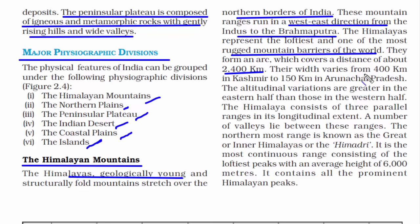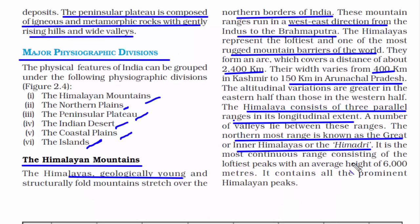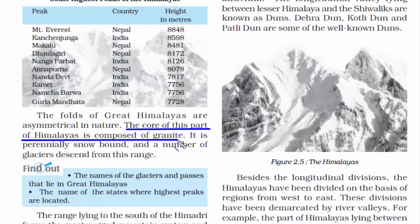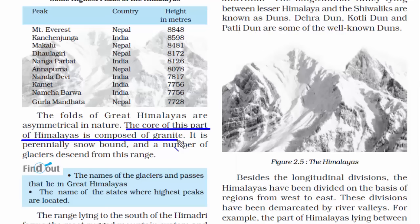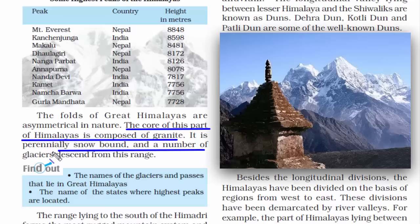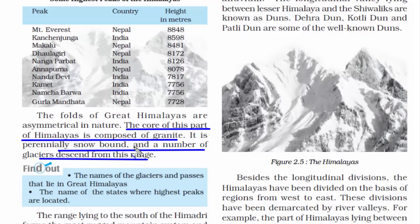The Himalayas consist of three parallel ranges. The northernmost is the Greater or Inner Himalayas, also called the Himadri, where mountain peaks average 6,000 meters in height. The core of the Himalayas is made of granite — igneous rock formed from solidified magma — suggesting a huge volcanic eruption under the Tethys Sea when the Indian plate collided with the Eurasian plate. On the outside it is snow-bound, and rivers are formed from the melting of this ice, snow, or glacier.